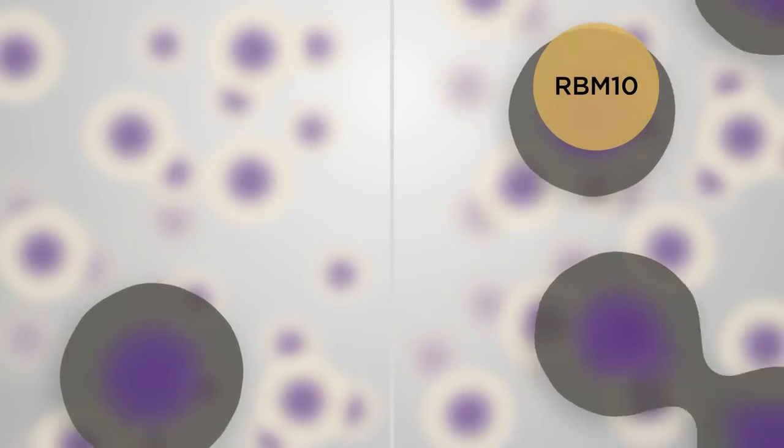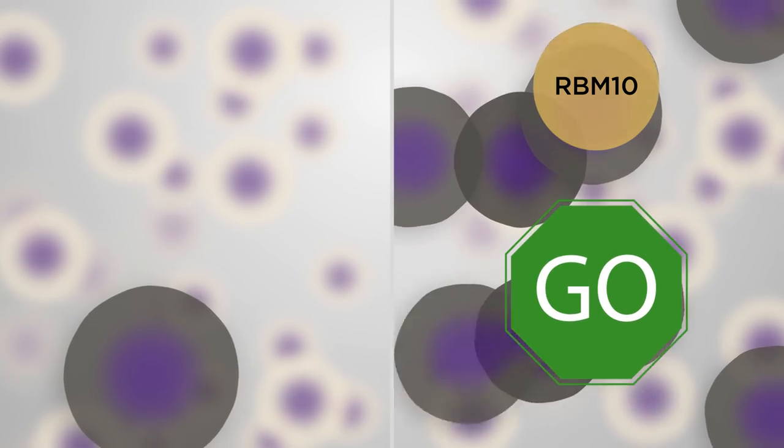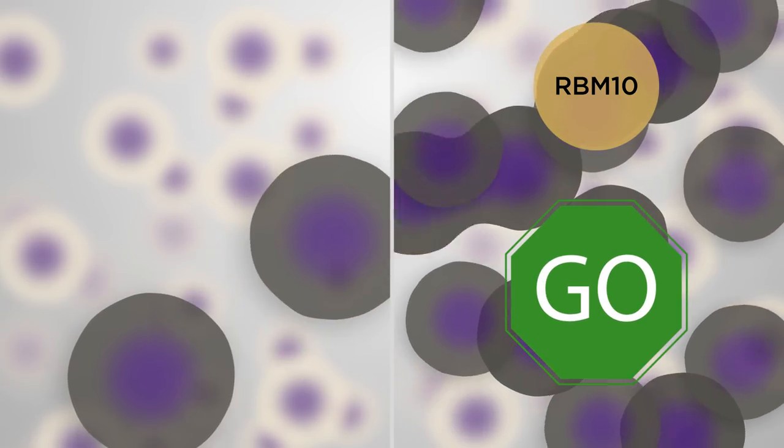Remarkably, the researchers found that RBM10 actually promoted cell proliferation in SCLC cells that don't express RBM5.